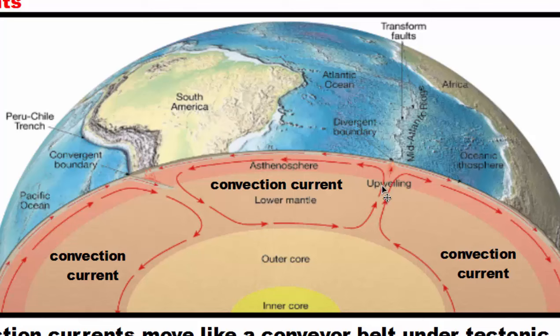As the material moves towards the surface, it starts to cool, moves underneath the lithosphere, and then sinks back down again. This creates a wheel-like motion, and this current goes round and round. As a result of this convection current, the South American plate is going to move in this direction.